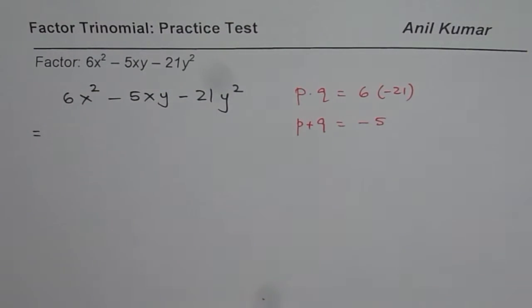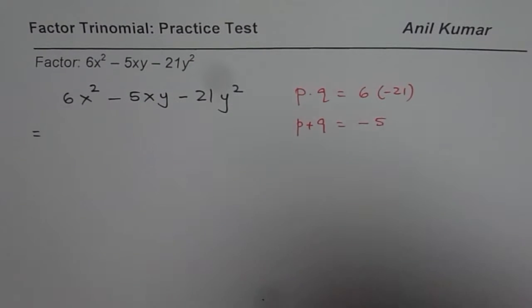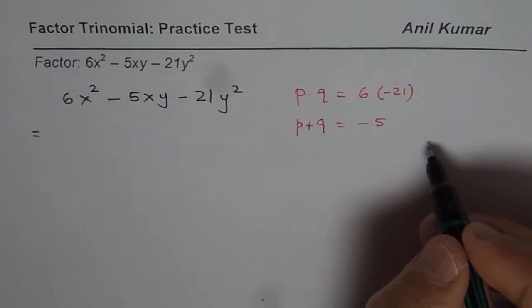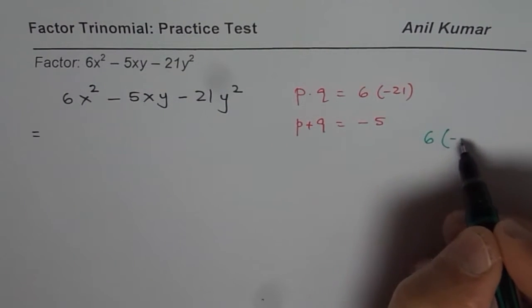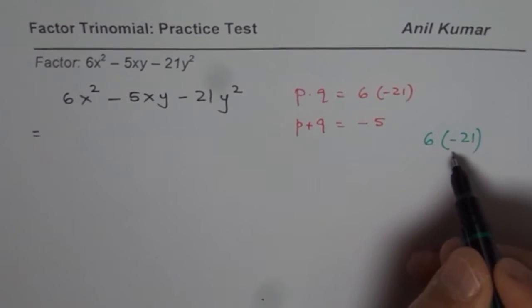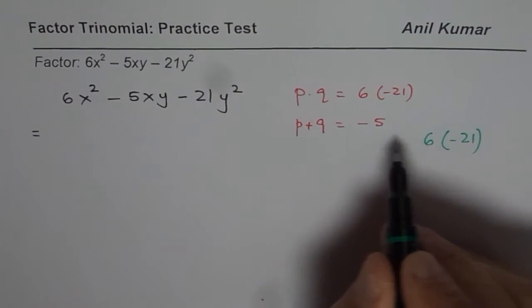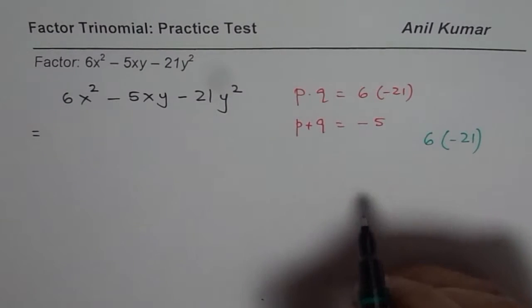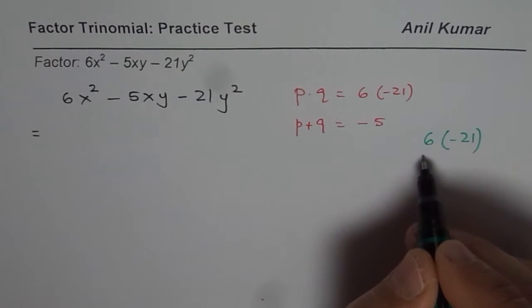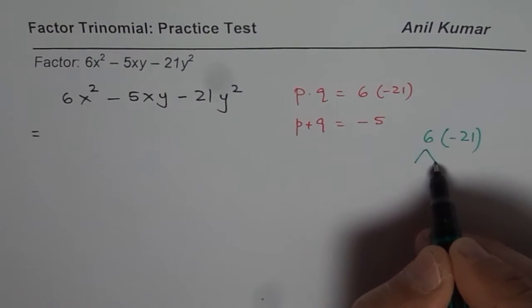Now the whole thing here is how to get this combination. So that is what I am going to discuss with you in this particular video. What strategy we have is we know that we need the product of 6 and -21. That means one of the numbers is negative. The bigger number is negative, the smaller one is positive. That is why when you add, you get -5.